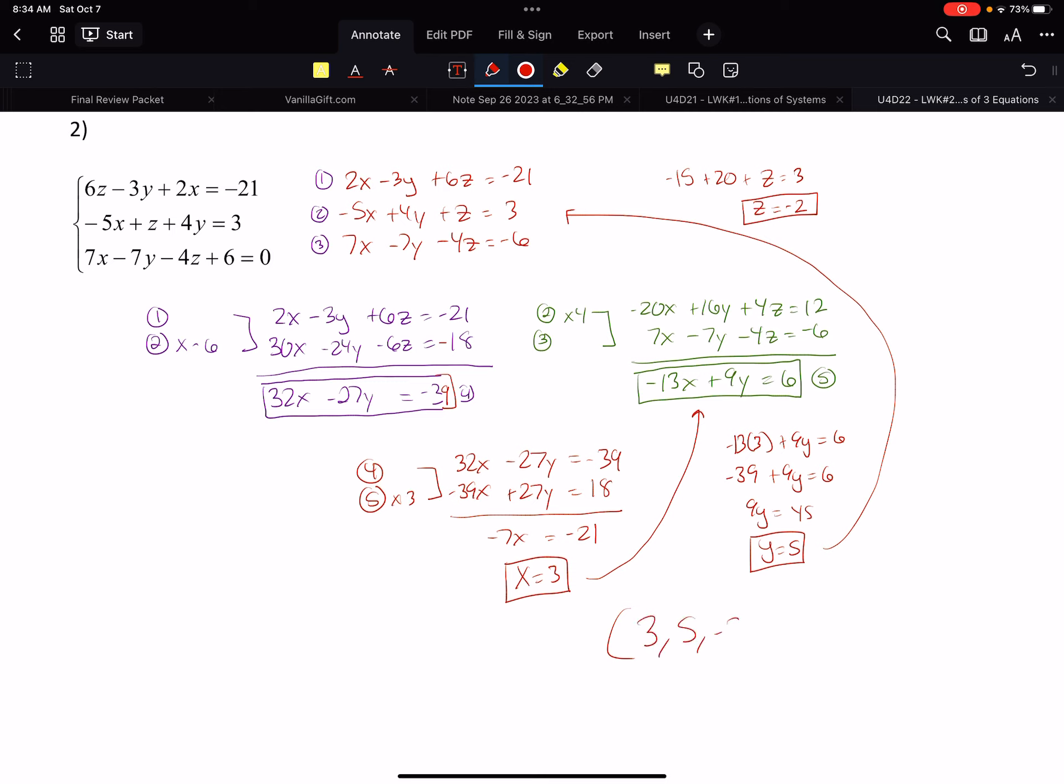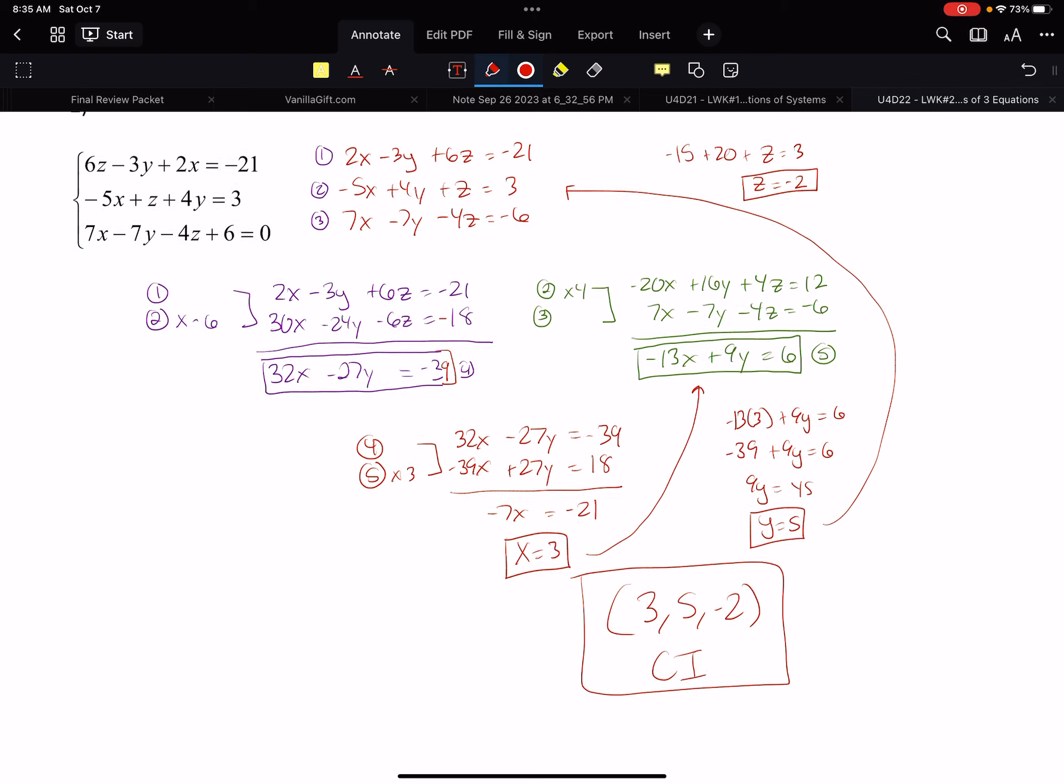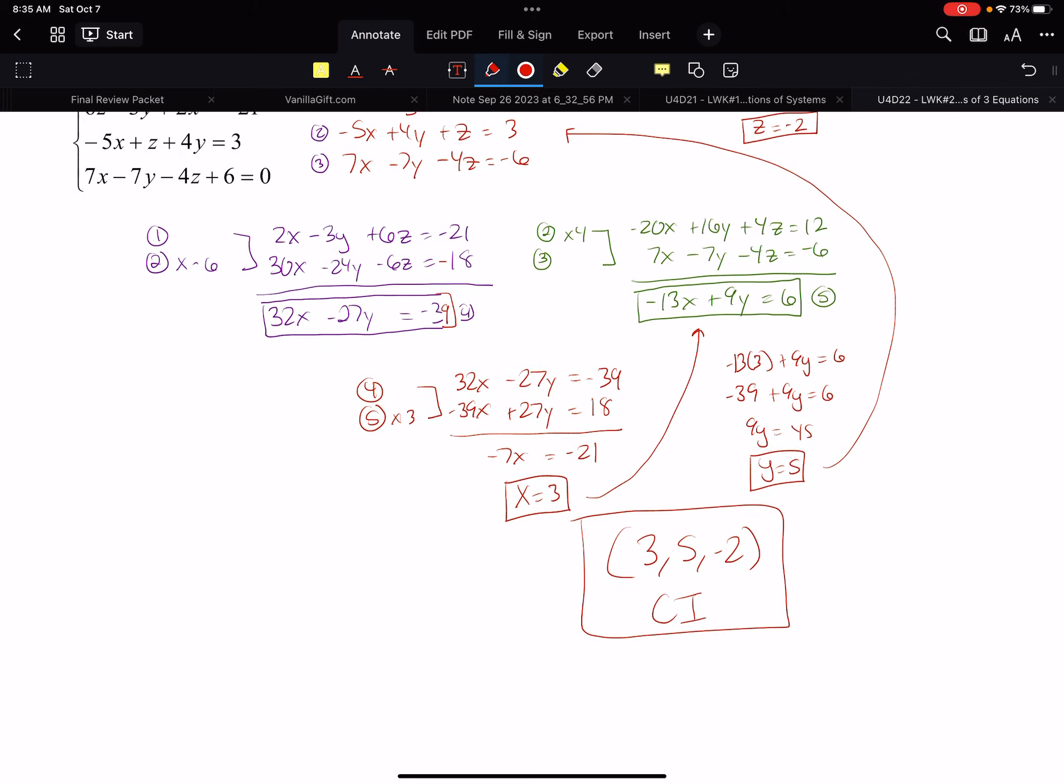So what's our answer? 3 comma 5 comma negative 2, and it's a consistent independent one point answer. So you make it into a 2 variable to then solve and work your way back up. If you started off by taking two equations and getting rid of x, and then you took two equations and got rid of y, it wouldn't get you there. You would have to eliminate the same variable right away - I got rid of z, new setup got rid of z again, xy equation, let's go. But being honest, this is a great method, but we have a calculator method.